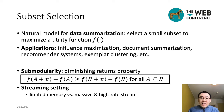In all of the above applications, the utility function satisfies the diminishing returns property, called submodularity. The marginal utility increase of adding an element v to a set A is always greater than or equal to adding v to its superset B.